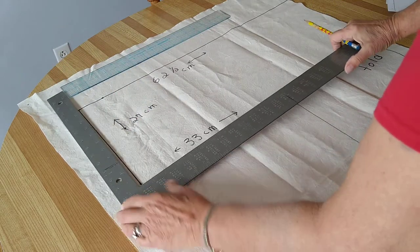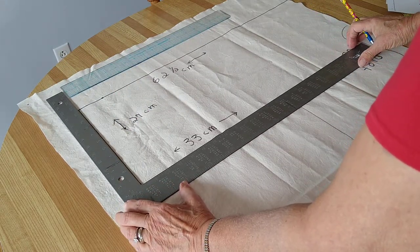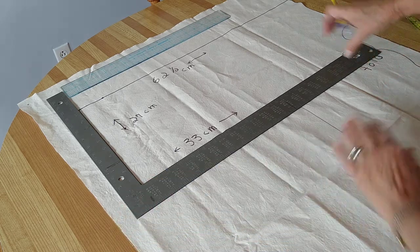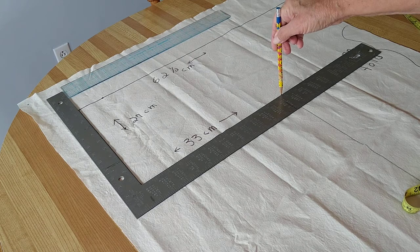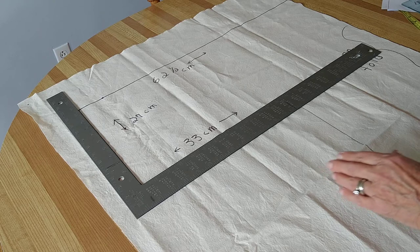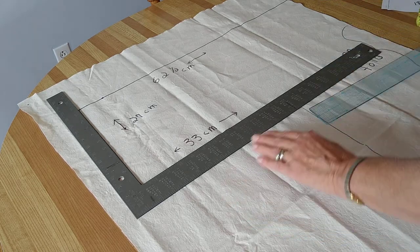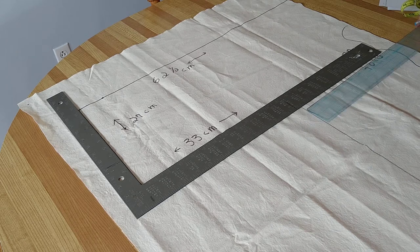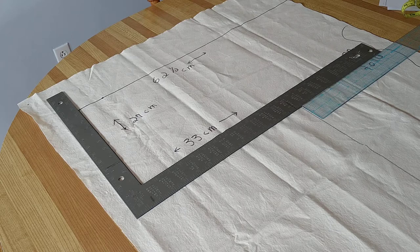Then we'll take the t-square and turn it and we're going to draw the line here 33 centimeters. The leftover part on this side over here will be 29 centimeters.